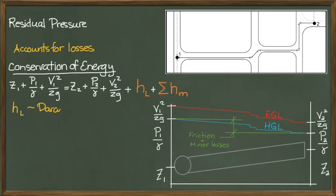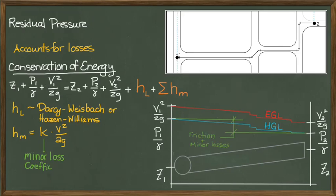The head loss in this expression could be estimated using Darcy Weisbach or Hazen Williams equations. The minor losses are found using the expression of k times the velocity head, where k is the minor loss coefficient, which is chosen based upon the type of fitting causing the minor losses.